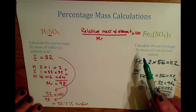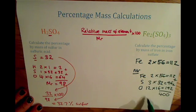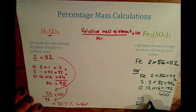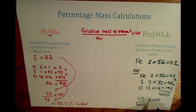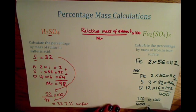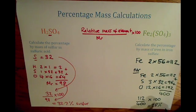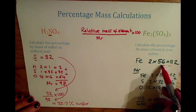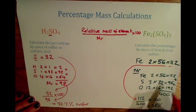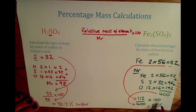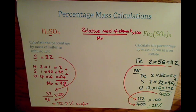To calculate the percentage by mass of iron in iron sulfate, we do 112 divided by 400 times by 100, and we find that the percentage of iron in iron sulfate is 28%. As a failsafe, remember that in percentage mass calculations, it will always be a small number divided by a big number, then times by 100.